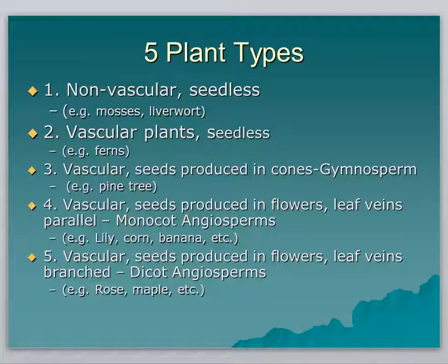Within the plant kingdom, there are five different categories of plant types. The first is the non-vascular plant that doesn't have a vascular system and is seedless — examples are mosses and liverworts. A vascular system is a system of pipes inside organisms that moves fluids around. In plants, it moves water and sugars around. But this first group of plants doesn't have a vascular system, so water, sugars, and nutrients have to diffuse from one cell to the next very slowly. These plants aren't very big because they can't get big without a vascular system.